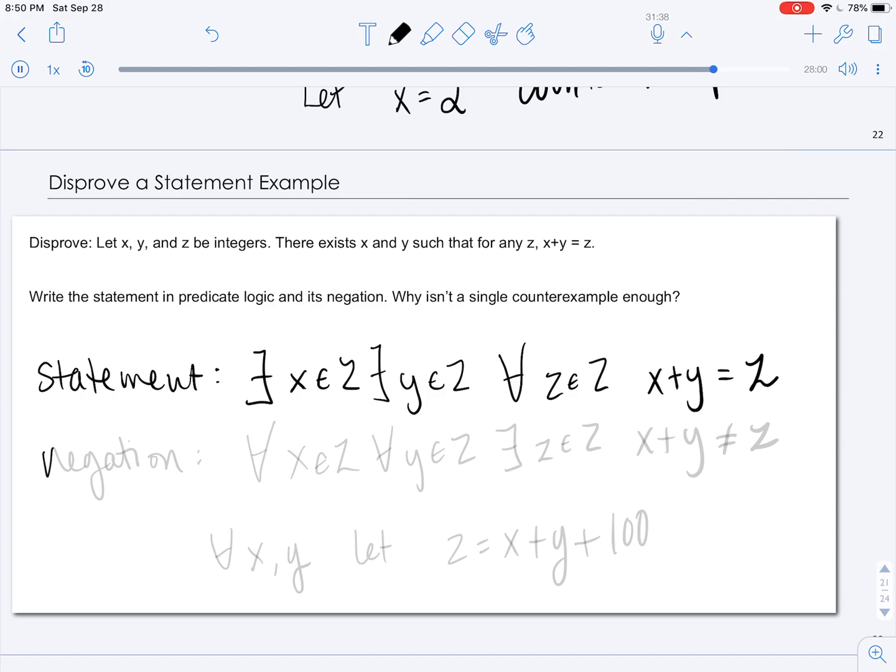Now let's negate it. It's going to be for any x that's an integer, for any y that's an integer, there exists an integer z such that x plus y is not equal to z.